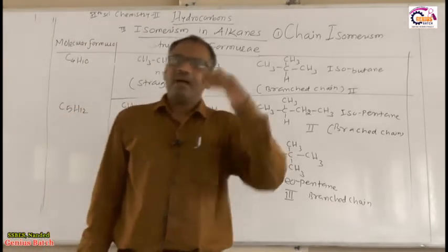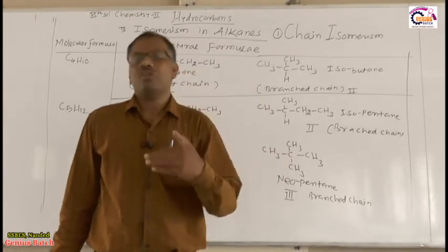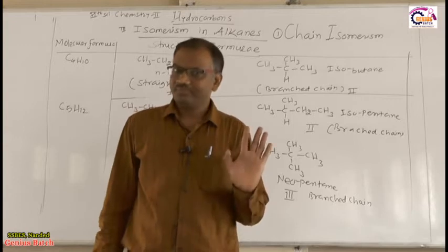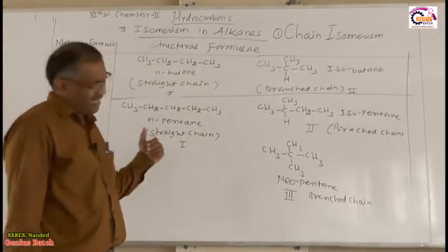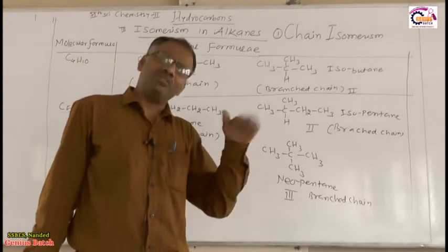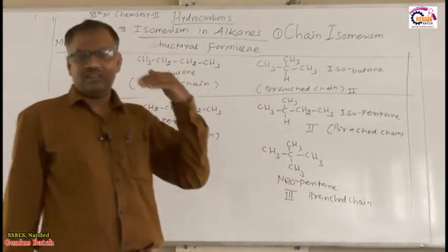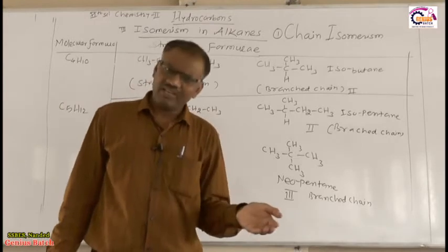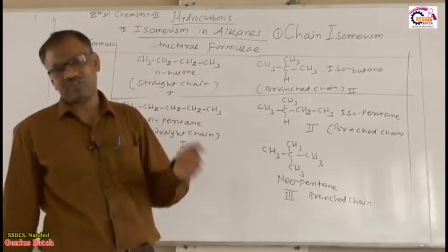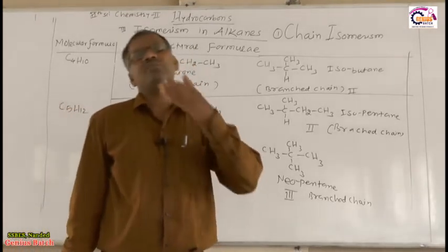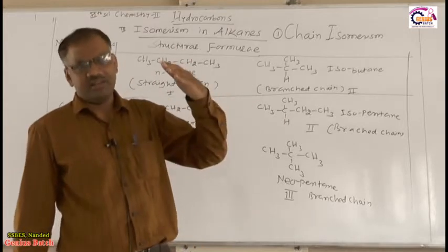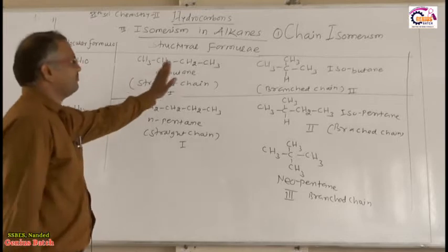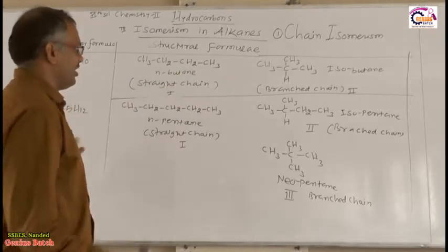The conclusion is that alkanes exhibit chain isomerism. There are different types of isomerism. In alkenes we will see position isomerism, and in alkynes also position isomerism and geometrical isomerism. We will cover those at the respective topics. This concludes the isomerism in alkanes, specifically chain isomerism.